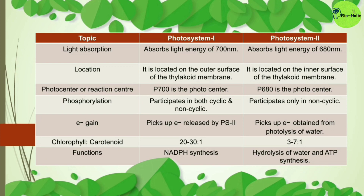For exam purposes, the differences between Photosystem 1 and Photosystem 2 are very important — take a screenshot or make a chart. Regarding light absorption: PS1 absorbs 700 nm and PS2 absorbs 680 nm. Regarding location: PS1 is on the outer surface of the thylakoid membrane, while PS2 is on the inner surface. The reaction center of PS1 is P700, and that of PS2 is P680. Regarding phosphorylation: PS1 participates in both cyclic and non-cyclic phosphorylation, while PS2 participates only in non-cyclic phosphorylation.